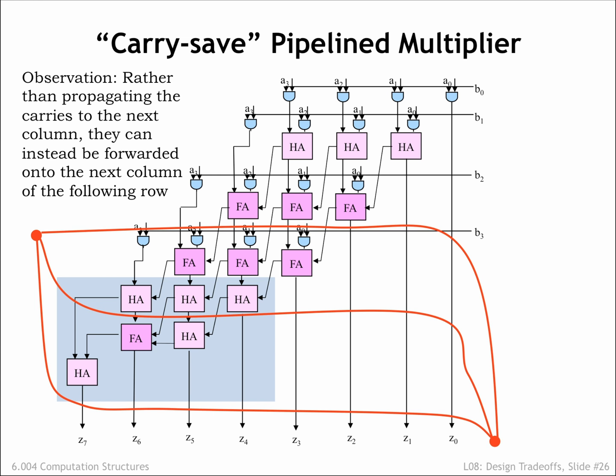Note that we had to add order N extra rows to take care of propagating the carries all the way to the end. The extra circuitry is shown in the gray box.